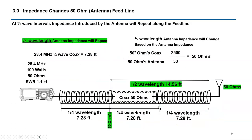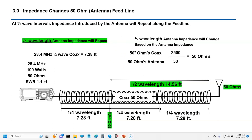At half wave intervals, impedance introduced by the antenna will repeat along the feed line. For example, with a 50-ohm antenna, 50-ohm coax, and 50-ohm radio, the impedance at the base of the antenna is going to repeat at exactly one half wavelength.